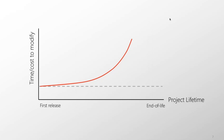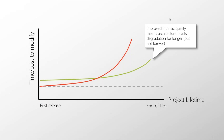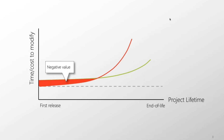Can we improve this architectural degradation? Yes — that's what this lecture is about. We can flatten the curve, though not make it completely flat. However, it doesn't come for free: the initial releases cost more money because we have to design in resilience and tolerance to change. There is a red region on the graph — negative value to the development organization — where it costs more to build intrinsic quality than we recoup.